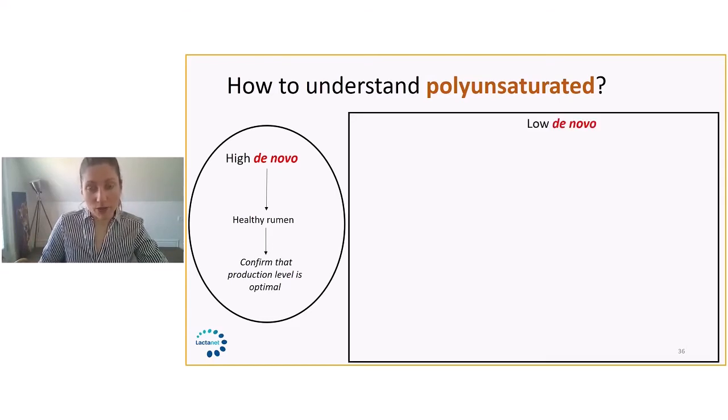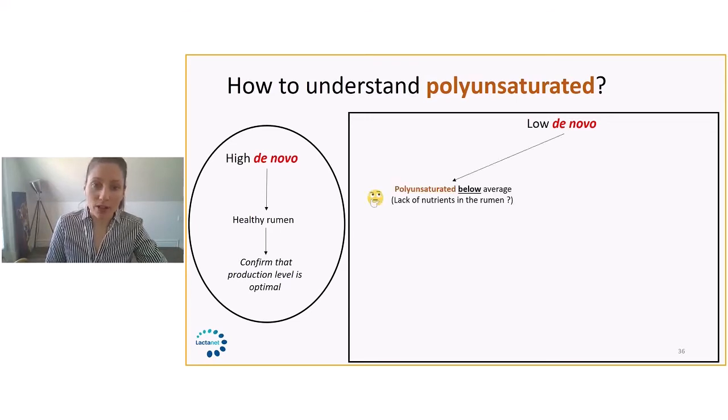The other scenario is when de novo are low, and this is where polyunsaturated become really interesting. The first case: when we have low de novo and polyunsaturated that are below average, we're thinking that there are not many double bonds found in milk fat. So we're thinking that the rumen is working really well. The biohydrogenation is really occurring, breaking down these double bonds. So it seems that it's working, but the bugs seem to be lacking nutrients maybe. We suspect that maybe there's a lack of nutrients for the bugs to really optimize de novo production.